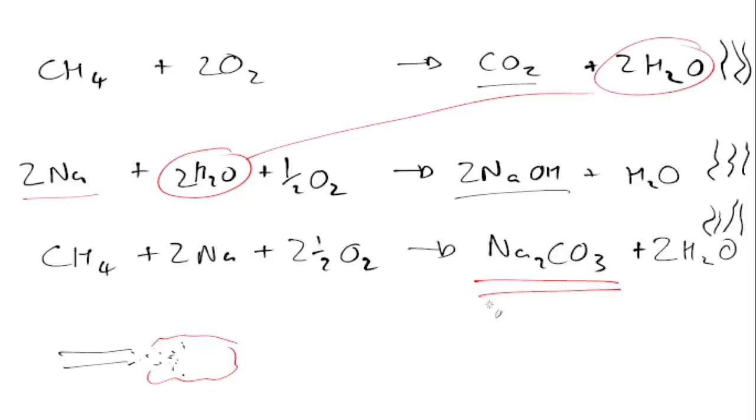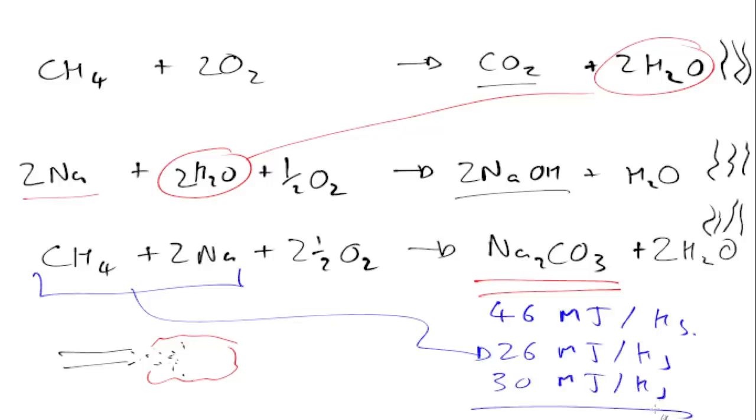Now, in terms of energy density, you lose some, of course, here. So, if you take regular gasoline, that's about 46 megajoules per kilogram. This, if you actually go through the numbers, comes out at about 26 megajoules per kilogram. Very similar to alcohol, which is about 30 megajoules per kilogram. So, this is actually sort of sensible heat engine numbers.